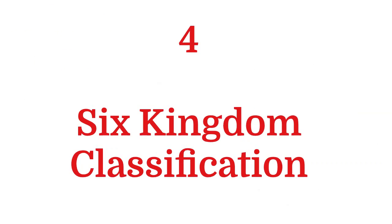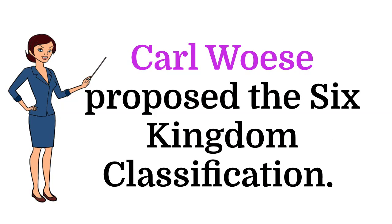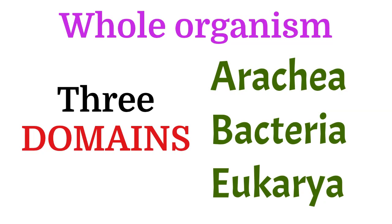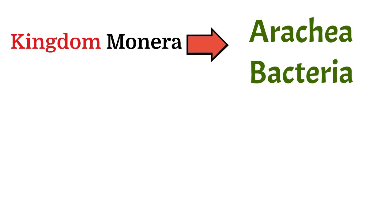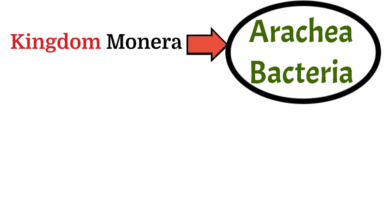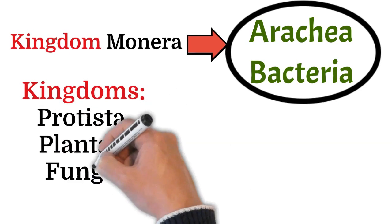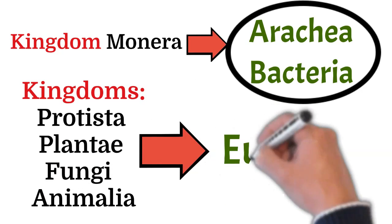Next, the point of discussion is Six Kingdom Classification. Carl Woese proposed the Six Kingdom Classification. According to it, the whole organisms were grouped into three domains: Archaea, Bacteria, and Eukarya. The prokaryotic kingdom Monera came under the first two domains, Archaea and Bacteria — meaning Kingdom Monera was divided into these two domains. Archaea and Bacteria are both domains as well as kingdoms. The remaining four kingdoms, namely Protista, Plantae, Fungi, and Animalia, were included under the third domain, Eukarya.